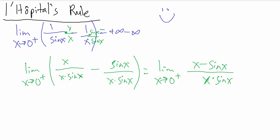Now, what happens if we do direct substitution on this? As x goes to zero from the positive side, x goes to zero and sine of x goes to zero. On the bottom, x goes to zero and sine of x goes to zero. So we have zero minus zero divided by zero times zero, which equals zero over zero. That makes us very happy because now we can use L'Hôpital's rule directly, since direct substitution gave us the indeterminate form zero divided by zero.